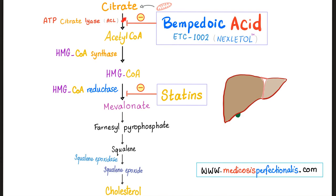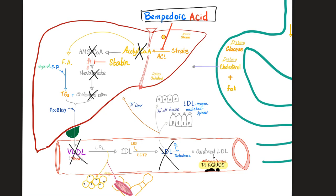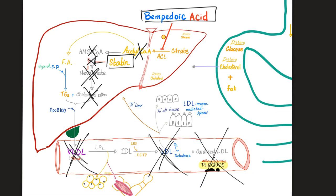Summary of the pathway: citrate → acetyl-CoA (ACL enzyme, inhibited by bempidoic acid) → HMG-CoA → mevalonic acid (HMG-CoA reductase, inhibited by statins) → cholesterol. Without acetyl-CoA, there's no HMG-CoA, no mevalonic acid, no cholesterol ester, no VLDL, and no LDL — that's why bempidoic acid is a lipid-lowering agent. Statins inhibit HMG-CoA reductase. Medicine makes so much sense once you understand what you're talking about.